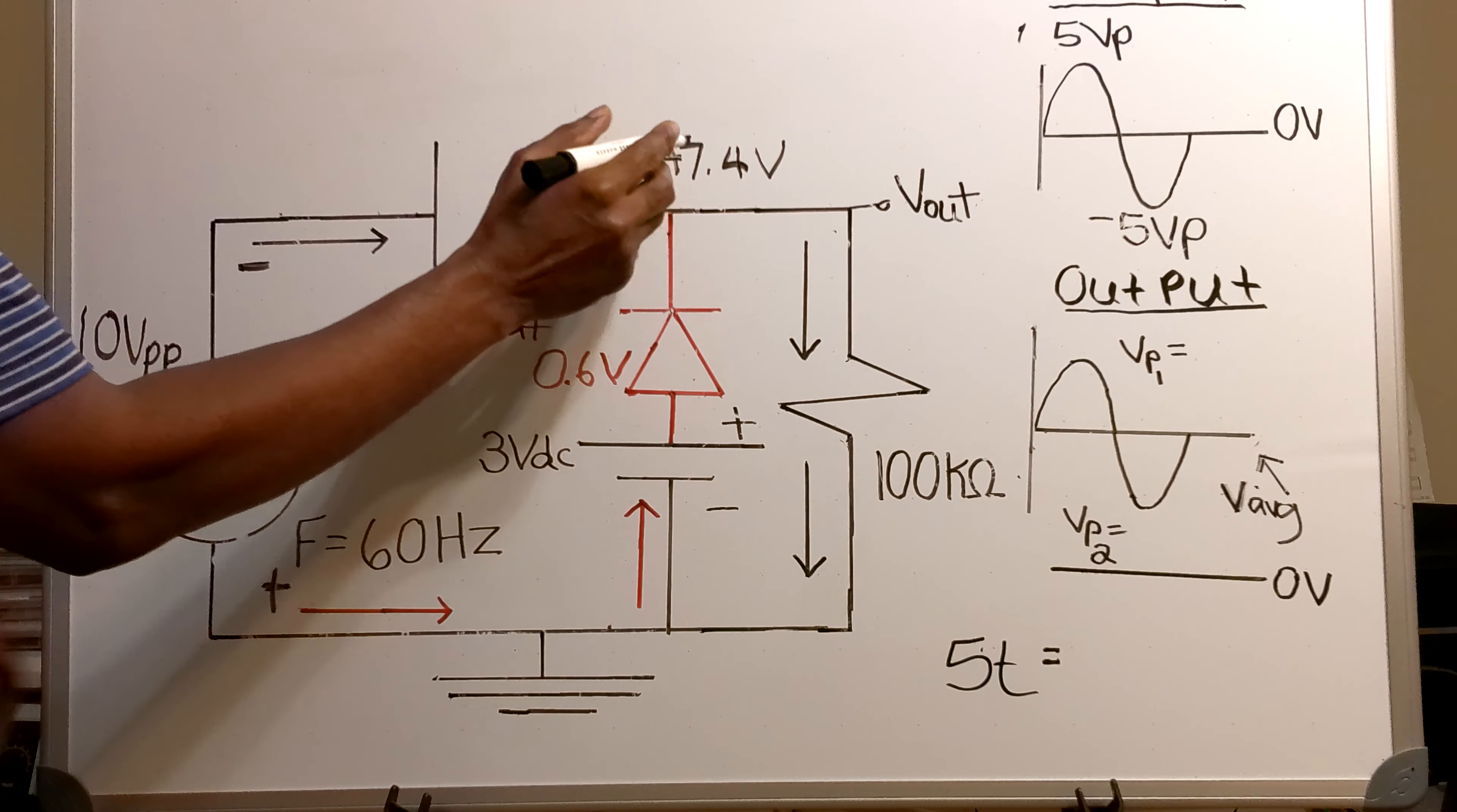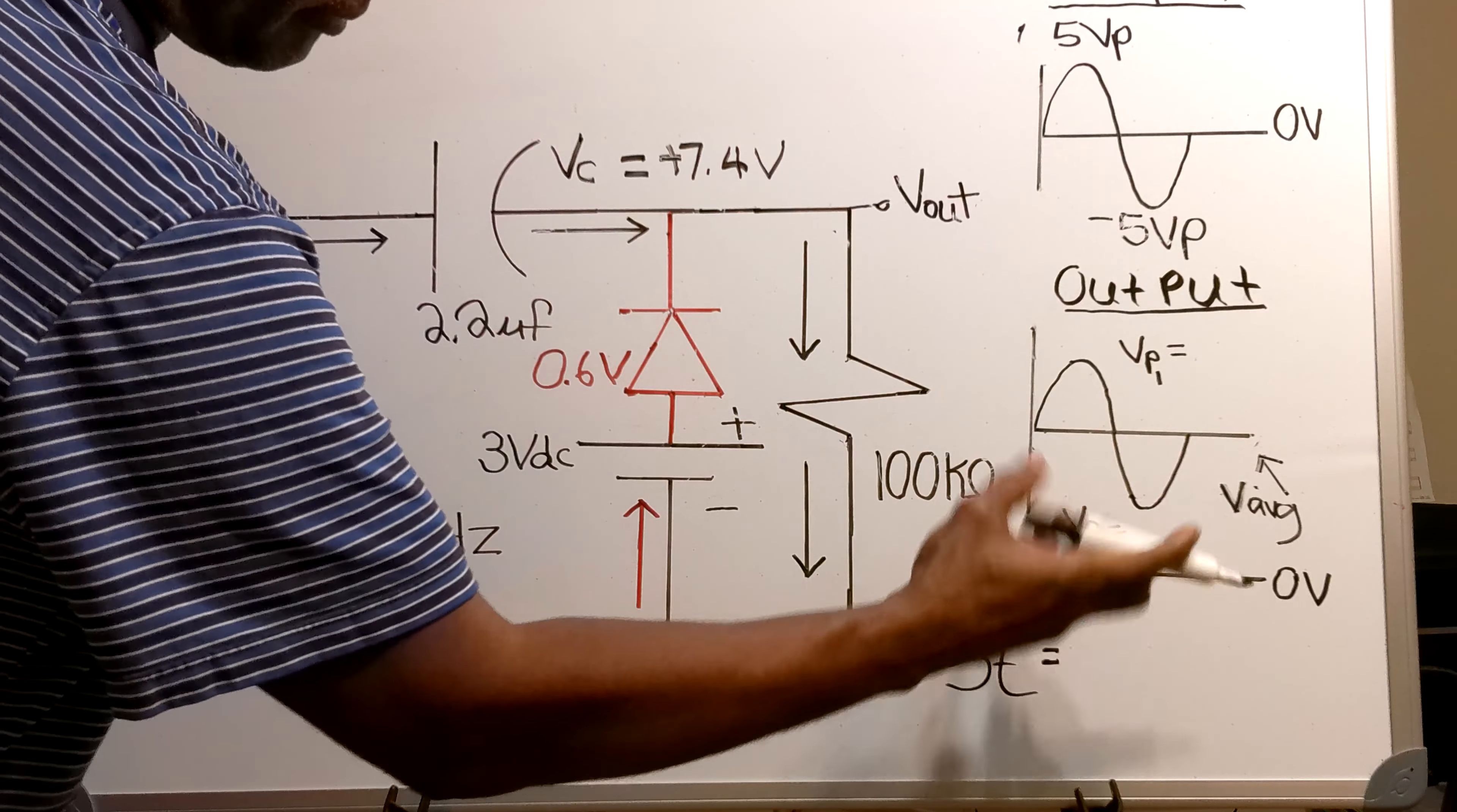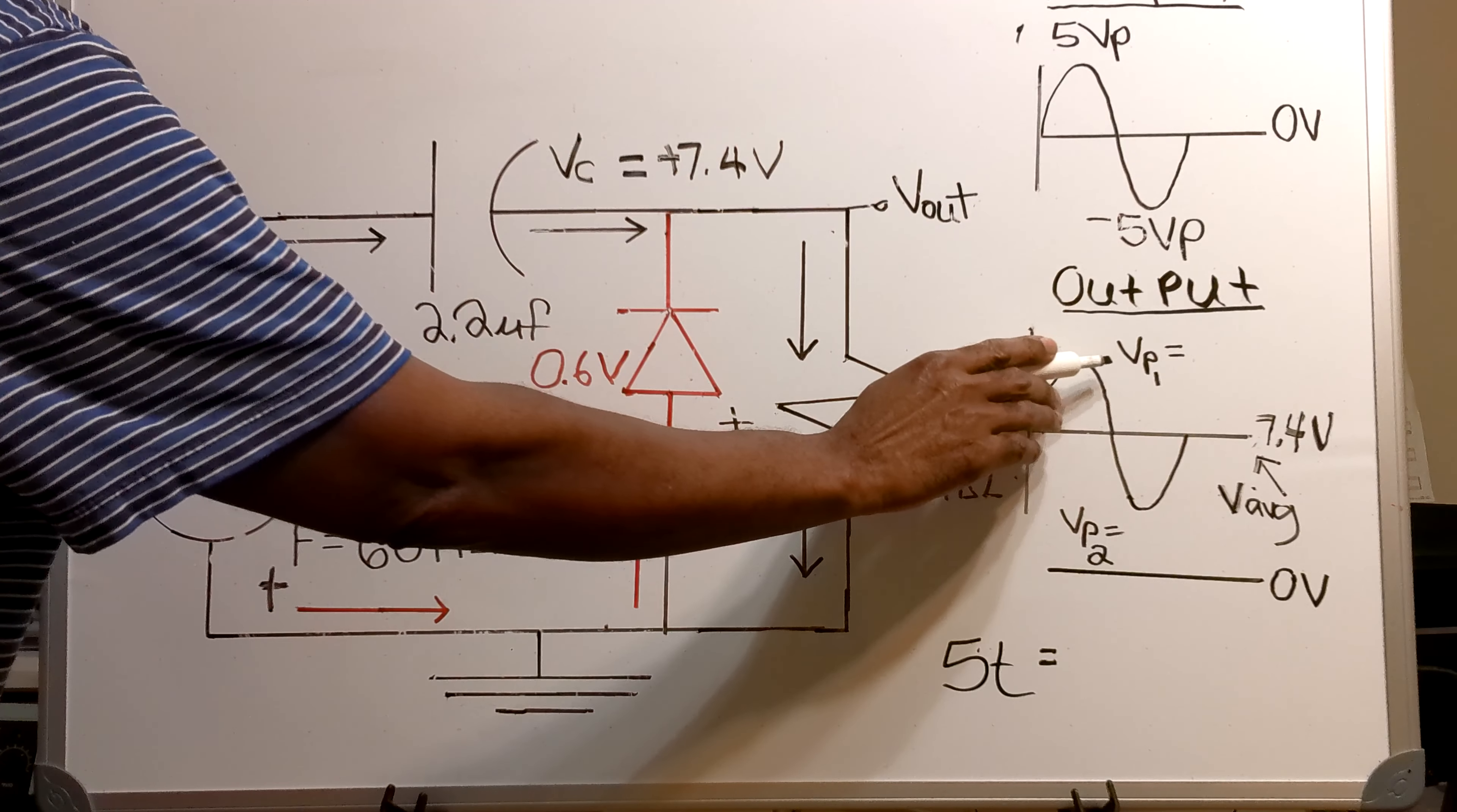Now when the steady state is reached, this polarity is no longer negative, this polarity is now positive, which means that this is now a positive 7.4 volts. That 7.4 volts is also the average voltage right here.